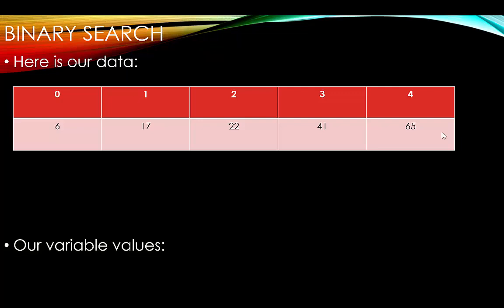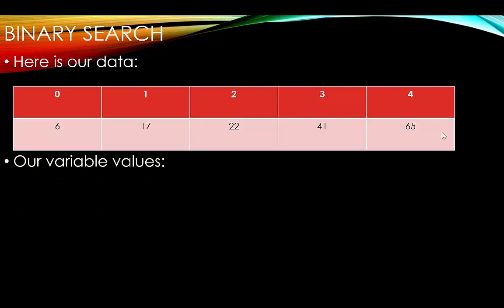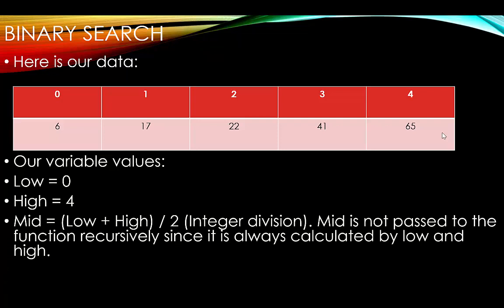The array must be sorted. Our variable values: low (lower bound) is 0, high is 4. Mid is calculated as low plus high divided by 2 using integer division — we drop the decimal. Mid is not passed to the function recursively since it's always recalculated from low and high. Our search item in this example is 41.